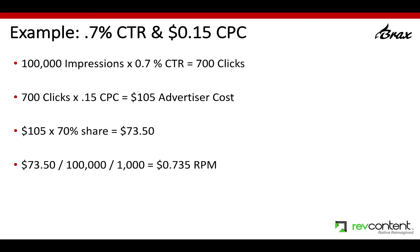Now compare that to a lower bid with a higher CTR. In the second example, I have a 0.7% CTR — about 30% better — and a 15 cent CPC, about 25% lower. If I take those 100,000 impressions times 0.7, now I'm getting 700 clicks. It only cost me $105 with the 15 cent CPC, so I didn't spend that much more even though I got 200 more clicks. RevContent and the publisher both made money — $73.50, and the RPM here is $0.735. That 3.5 cent RPM difference may not sound like much, but when you're dealing with millions and billions of impressions, it adds up very quickly and it's significant to both RevContent and the publisher.